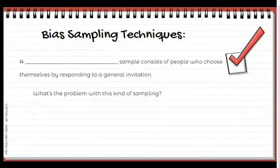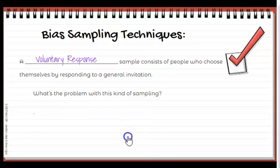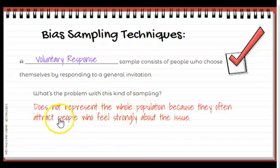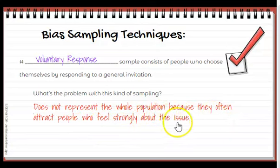A second biased sampling technique that's not a good choice is what we call a voluntary response sample, which consists of people who choose themselves by responding to a general invitation. This is where people call in or write in. The problem is it does not represent the whole population because it often attracts people who feel strongly about an issue — like people who call into the radio or fill out a Google review about a business they had a bad experience with. Those results are often biased one way or the other because of strong feelings.